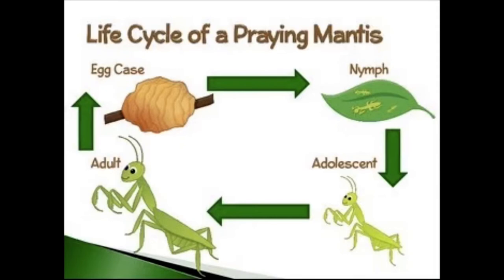A praying mantis goes through three life stages: egg, nymph, and adult. In autumn, the female mantis lays as many as 400 eggs inside an egg case attached to a plant. In spring, the eggs hatch. The tiny praying mantis babies emerge from the egg case. These brand new hatchlings, or nymphs, don't quite look like me.